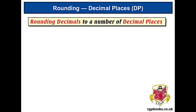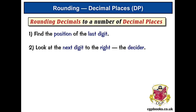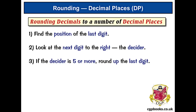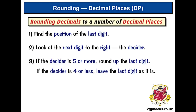To round to a number of decimal places: first, find the position of the last digit — that's the last decimal place you want in the rounded number. Then look at the next digit along to the right. This is the decider. If the decider is 5 or more, then round up the last digit. But if it's 4 or less, leave the last digit as it is.